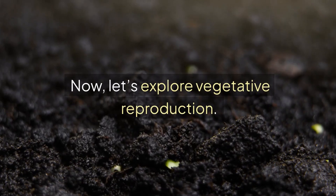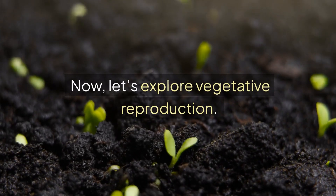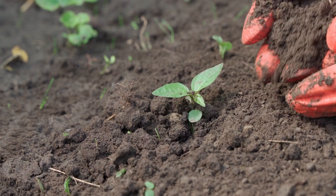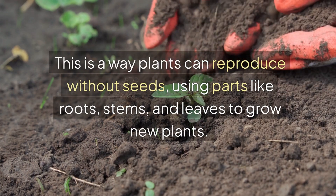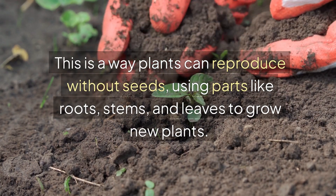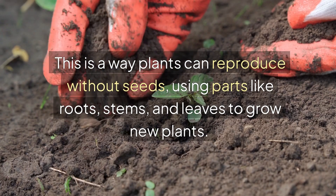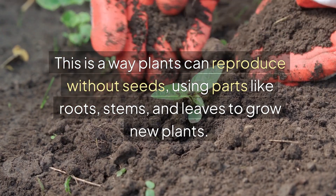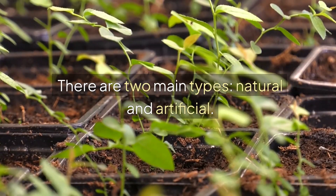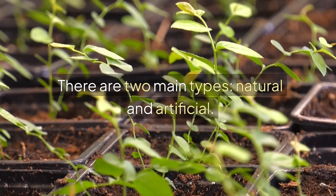Now, let's explore vegetative reproduction. This is a way plants can reproduce without seeds, using parts like roots, stems, and leaves to grow new plants. There are two main types: natural and artificial.